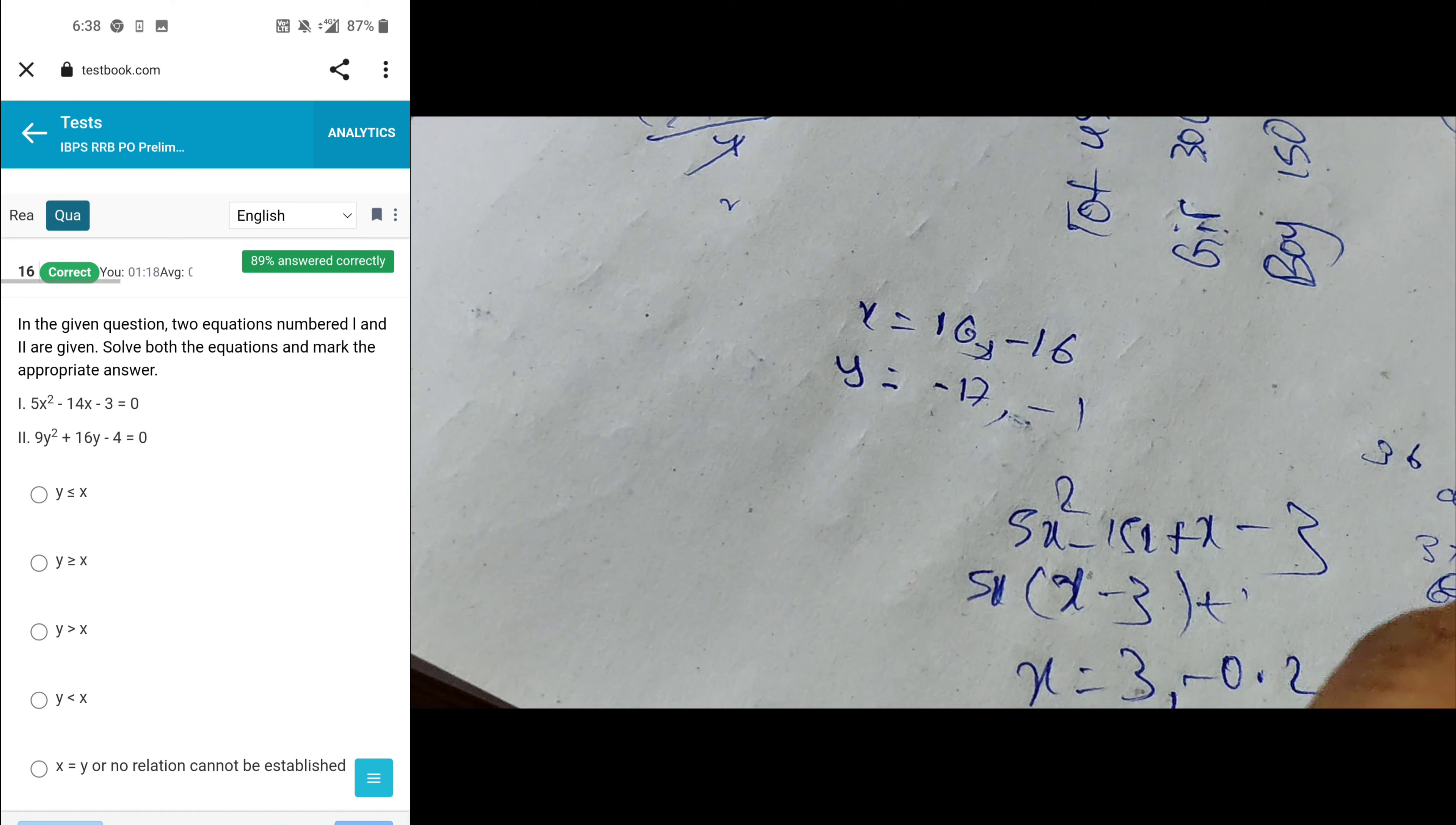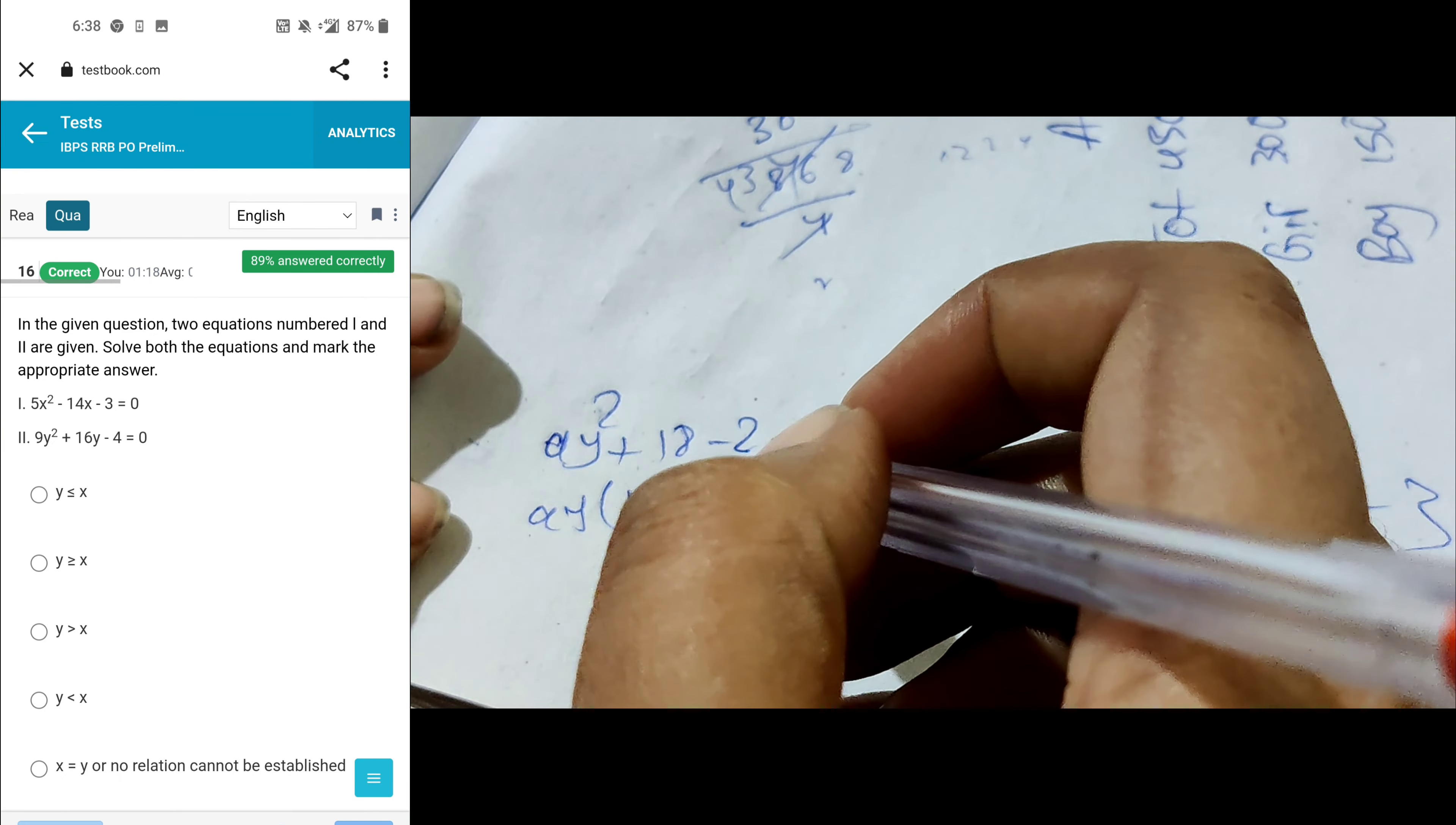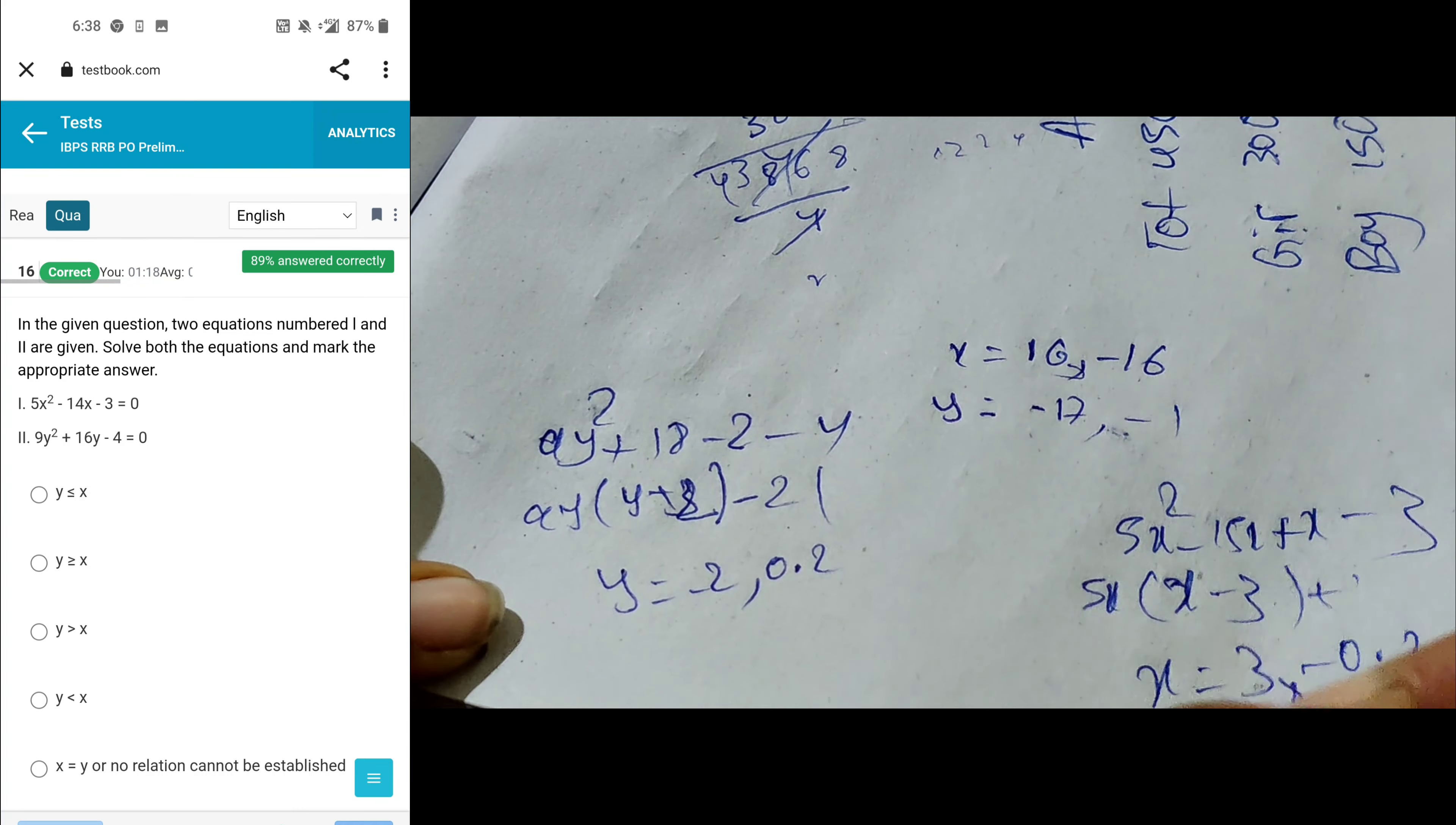Next, 5x² minus 15x plus x minus 3, 5x common, x minus 3 plus x minus 3, x equals 3 and -0.2. And y equals 36 means 15. So 9y² plus 18y minus 2 minus 4, 9y means y plus 3, y plus 2 and minus 2, so y equals -2 and 0.2.